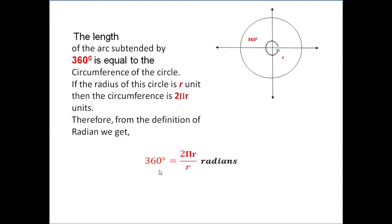360 degree is equal to the length of the arc which is 2πr to the radius of the circle r. Thus, 360 degree is equal to 2πr by r radians. This can be rewritten as 360 degree equals 2π radians because r and r will be cancelled.